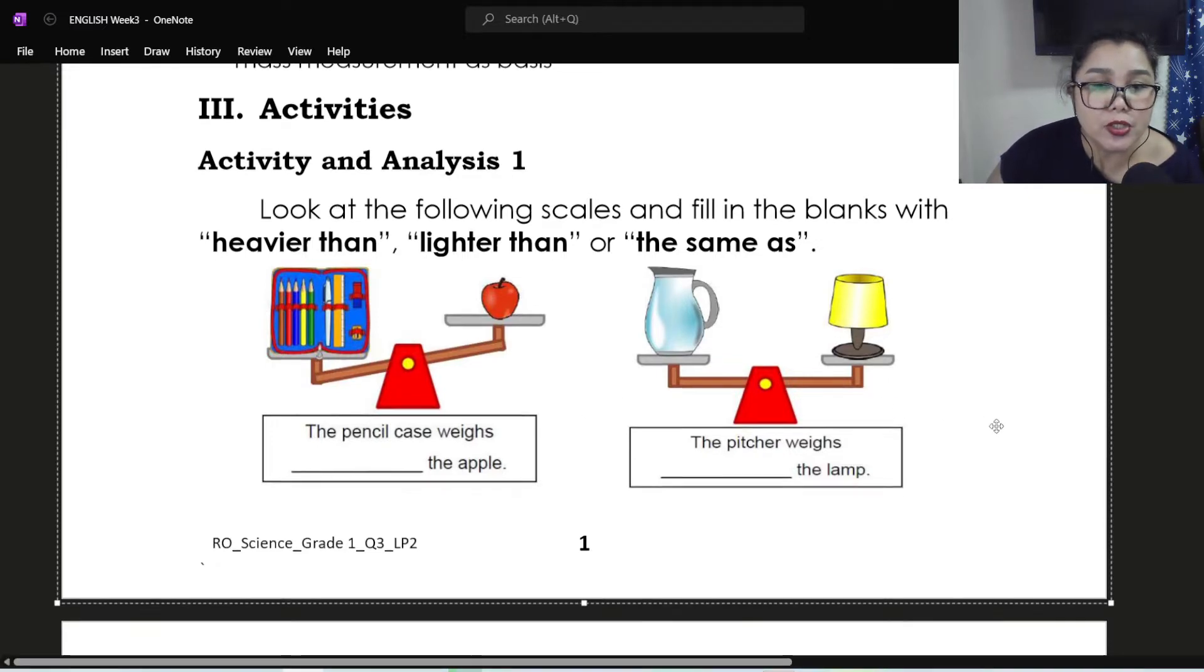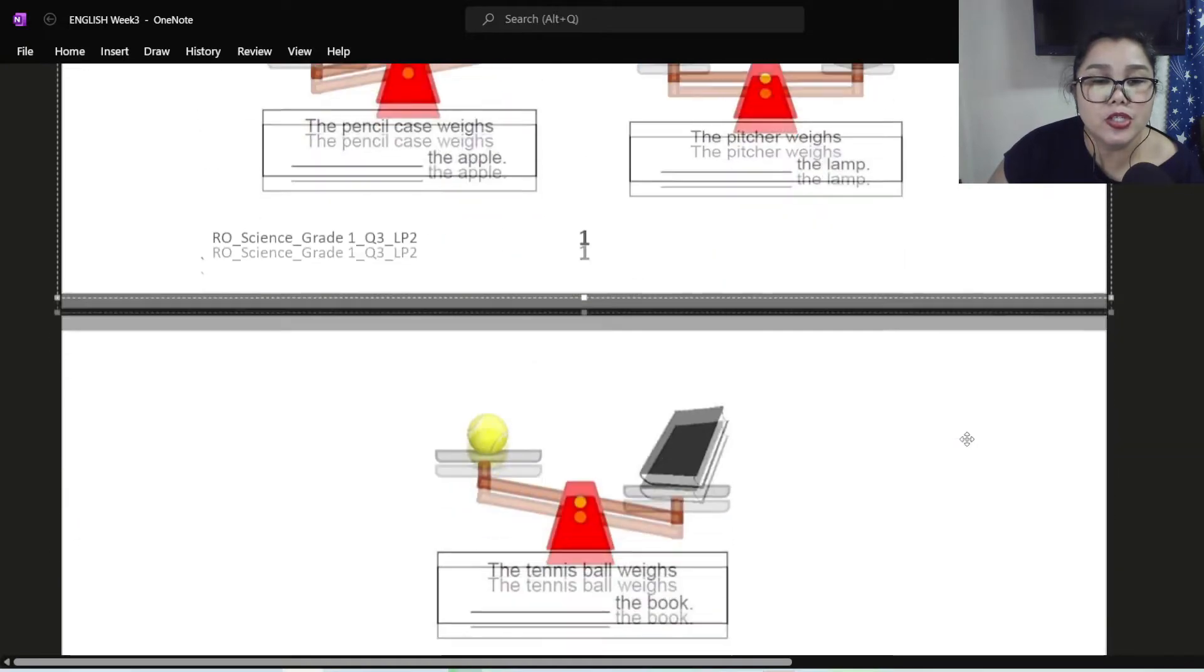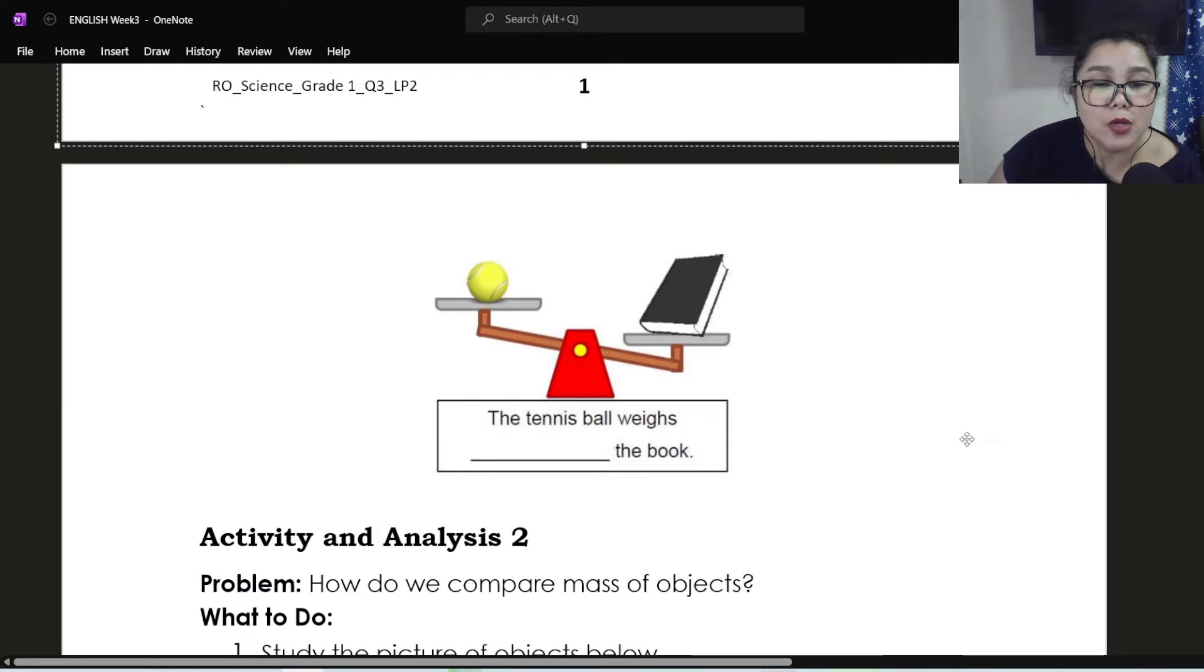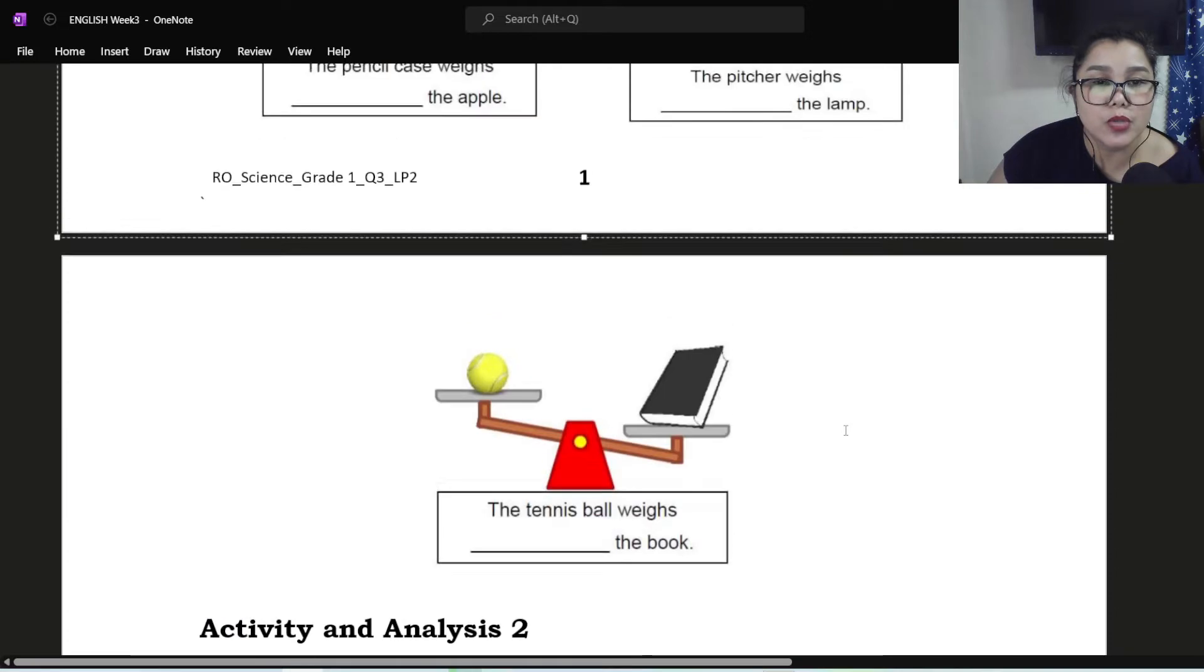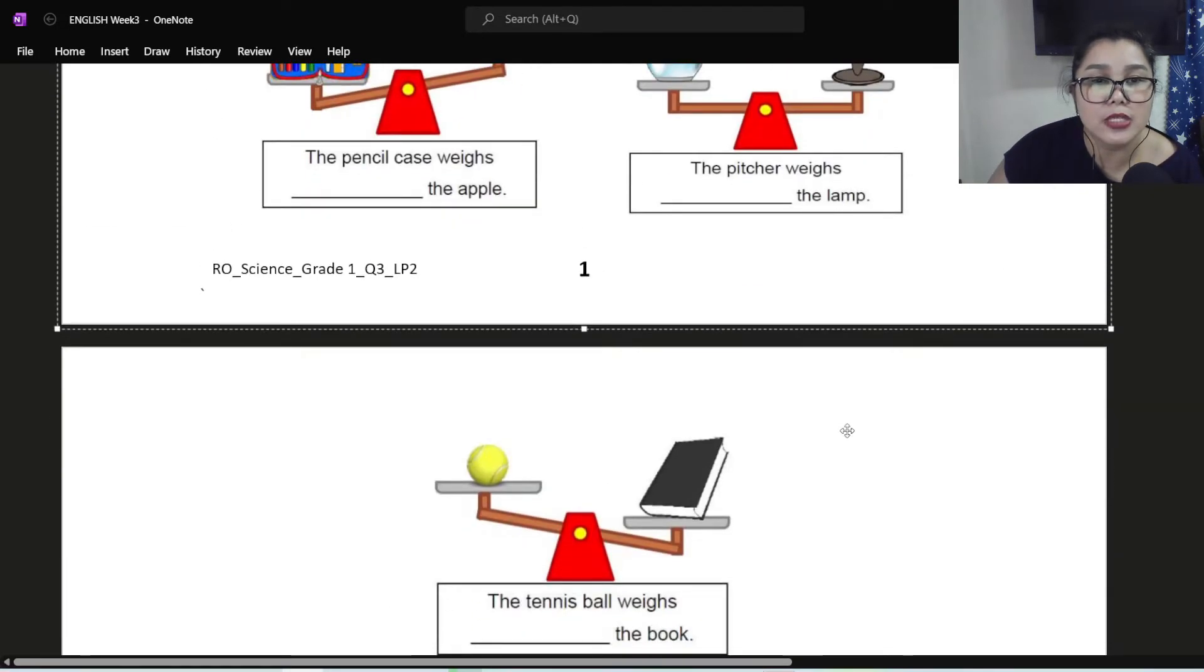The second picture, two objects being compared, are a picture and a lampshade. So the picture weighs blank the lamp. So is it heavier than the lamp, lighter than the lamp, or the same as the lamp? On page two is the third picture. We have tennis ball and a book. The tennis ball weighs blank the book. Is it heavier than, lighter than, or the same as?